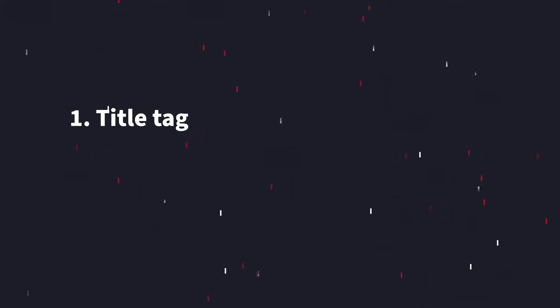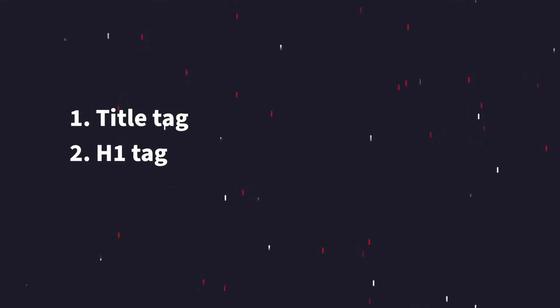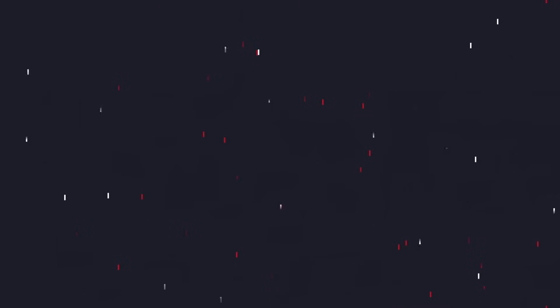The three kings are three key spots that Google looks to in order to detect what your page is all about. Those are: one, the title tag; two, the H1 tag; and three, the first sentence or first paragraph of your body copy. You can also choose to include your keyword in the URL as well as the meta description, but those aren't necessarily ranking factors since Google rewrites a lot of meta descriptions anyway. But if you're going to change it in the title tag and H1, you might as well do it there too.